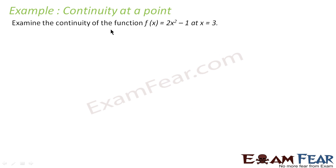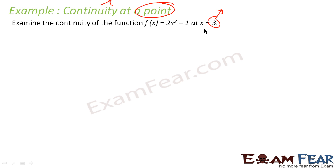So let's take one more example. We have to examine the continuity of this function at x is equal to 3. Please note, the reason why we are taking examples is to focus that continuity is defined at a point. Here also, if you see, we have a function and we have a point at which we are discussing continuity. So generally, continuity is defined at a point.